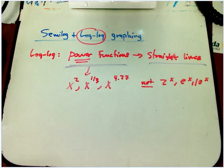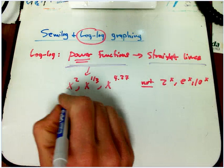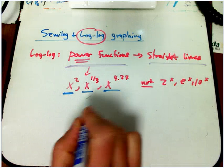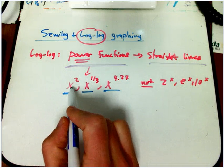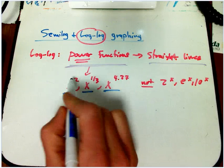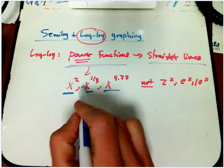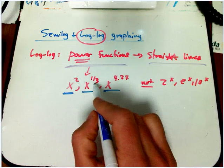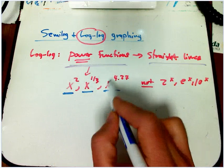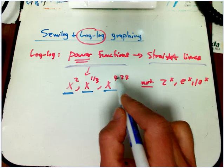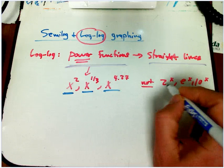It's really important to make this distinction: power functions are where x, the variable, is in the base and you've got a fixed exponent. So x squared, y equals x squared parabola, x to the one-third cube root function, even if the power is some weird thing, as long as it's a constant, that's a power function.